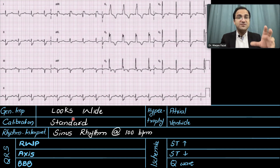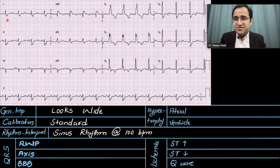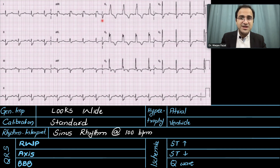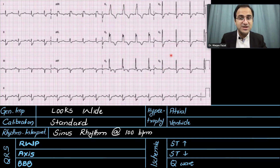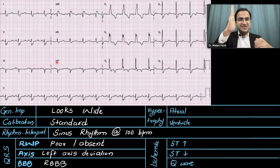Now let's look at the R wave progression. In the hexaxial leads except AVR, all QRS should be positively deflected upward. Lead I is positively deflected, lead II is negatively deflected, lead III is also negatively deflected, AVL is positively deflected, AVF is also negatively deflected. So this is poor R wave progression. In the precordial leads, V1 and V2 should be negatively deflected and V5 and V6 should be positively deflected — but here they are positively deflected in V1-V2, which is not normal. R wave progression is poor and even absent. Now let's look at the axis using leads I and AVF — they are leaving each other, which indicates left axis deviation.